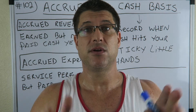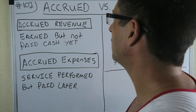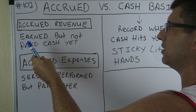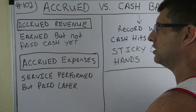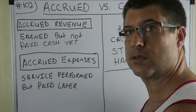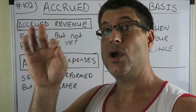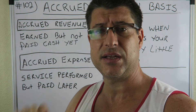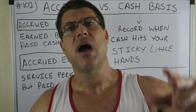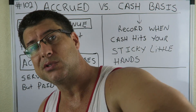Alright, quick recap: accrued revenue — earned but not paid cash yet. Accrued expenses — service performed but paid later. Cash basis — you record when the cash hits your sticky little hands. That was just a quick little video. I hope everyone enjoyed it. I'll see y'all next time. CPA Strength, I'm out.